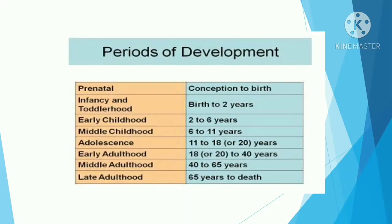Periods of Development: Prenatal — conception to birth. Infancy and toddlerhood — birth to 2 years. Early childhood — 2 to 6 years. Middle childhood — 6 to 11 years. Adolescence — 11 to 18 or 20 years. Early adulthood — 18 or 20 to 40 years. Middle adulthood — 40 to 65 years. Late adulthood — 65 years and older.